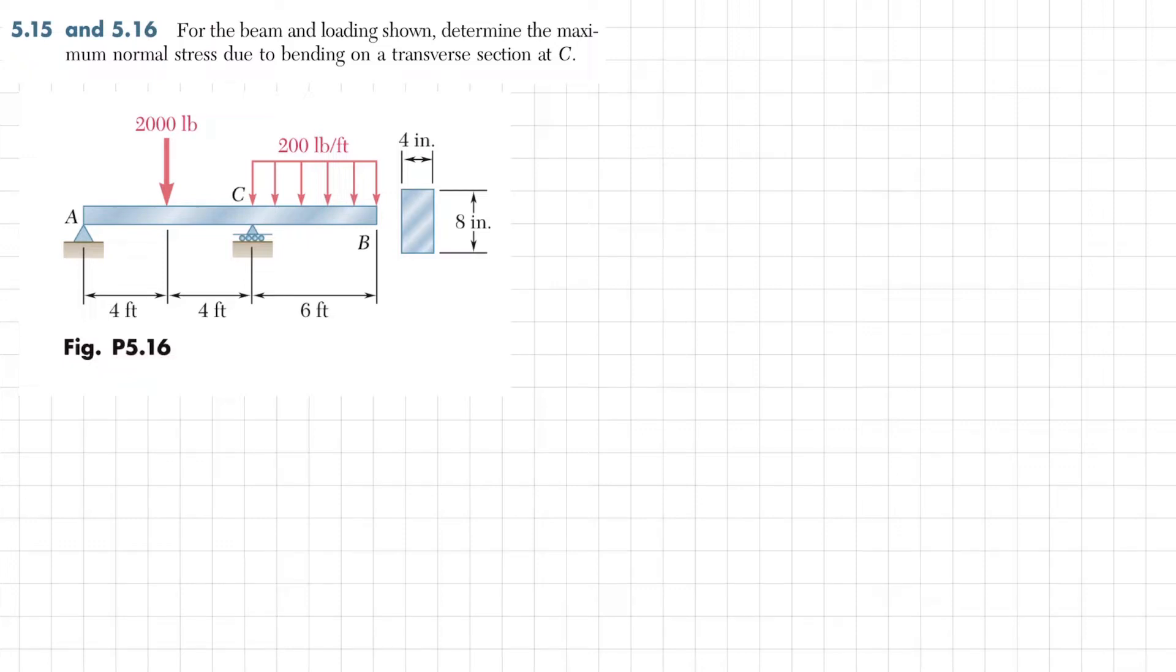This is an overhanging beam that is supported at point A and C. The cross section of this beam has width 4 inches and height 8 inches. From C to B there is a distributed load of 200 pounds per foot, and between A and C there is a point load of 2000 pounds.